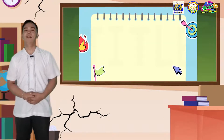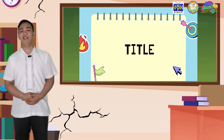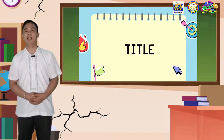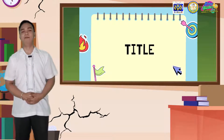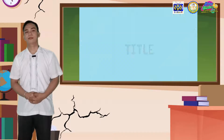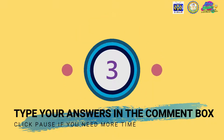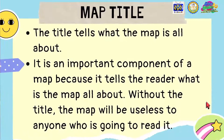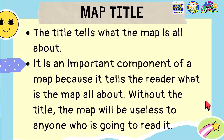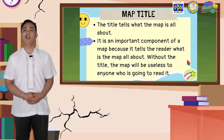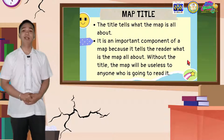Another component of a hazard map is the title. From the word itself, a title tells what the map is all about. It is an important component of a map because it tells the readers what the map is about. Without the title, the map will be confusing to anyone who is going to read it. The title will remove any confusion on what the map is all about.